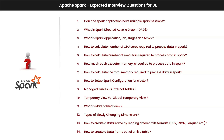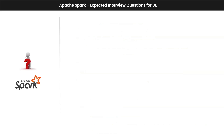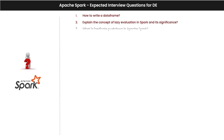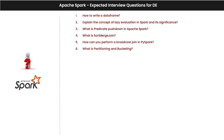How to write a DataFrame — we saw that practically. The concept of lazy evaluation in Spark and its significance — covered. What is predicate pushdown — we learned that. What is a broadcast join — we saw the practical when doing broadcast join as part of performance optimization. What is caching and persisting — very important concept. Cache versus persist — we have practicals for these.